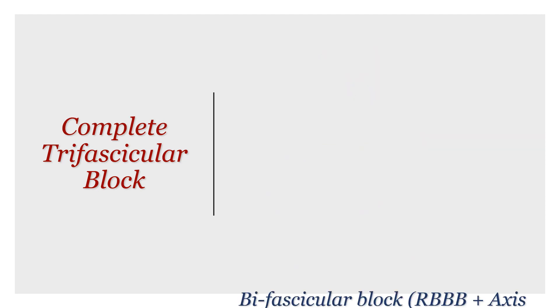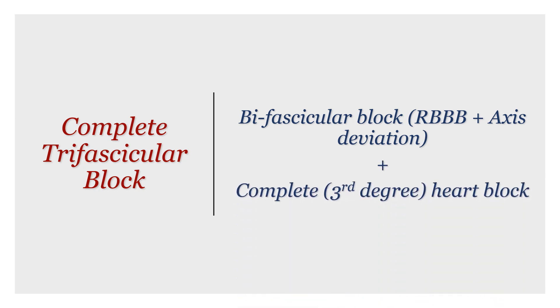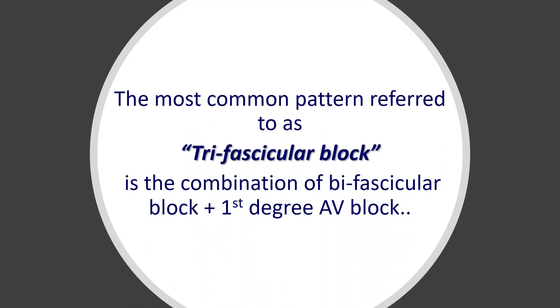As for complete trifascicular block, it is basically a bifascicular block — right bundle with axis deviation — in addition to a complete third degree heart block. The most common pattern referred to as trifascicular block is bifascicular block plus a first degree heart block.